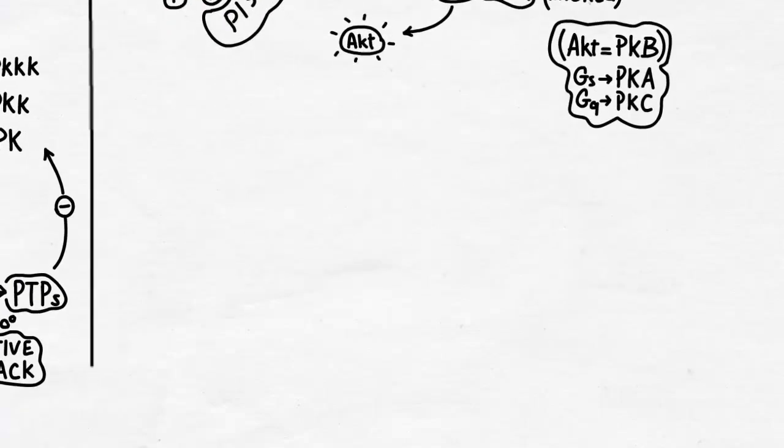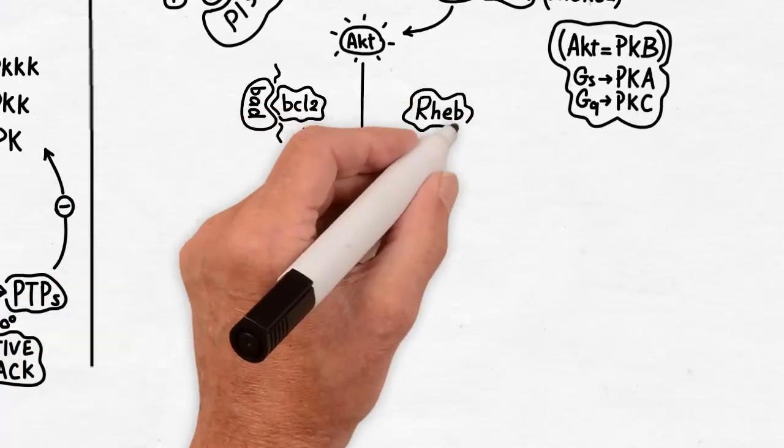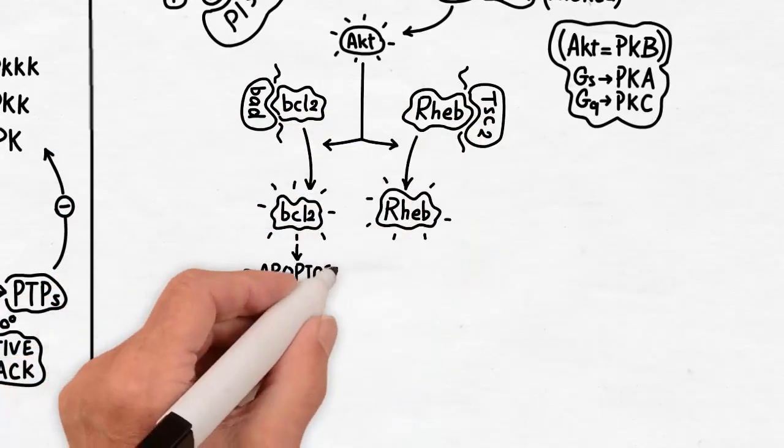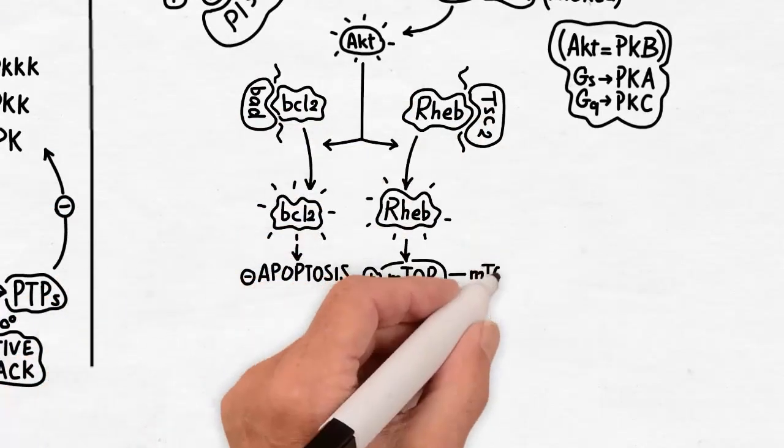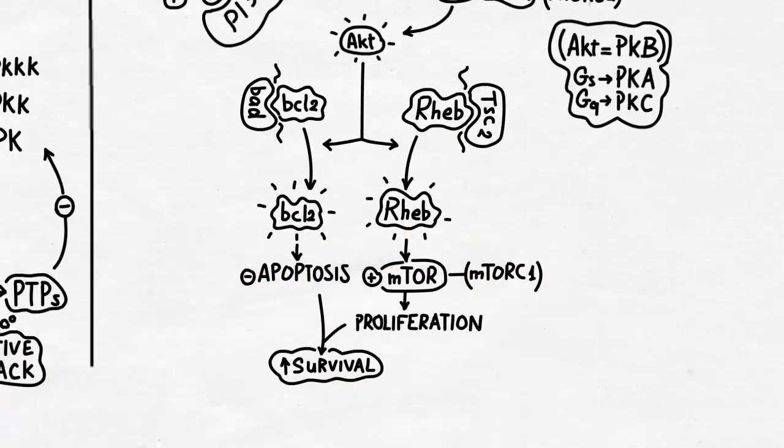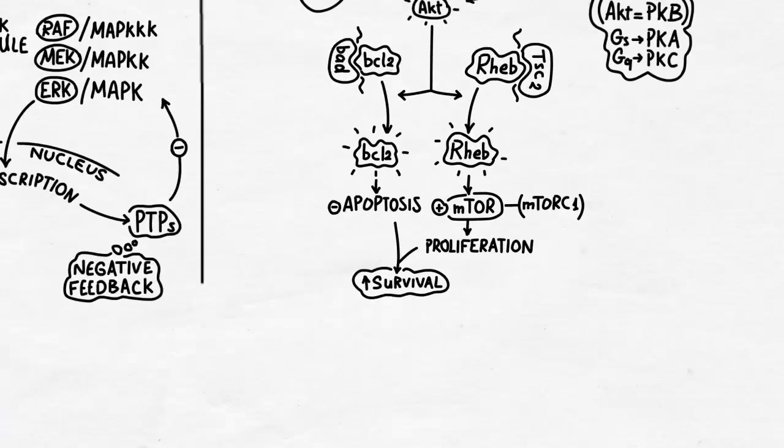An active AKT releases BAD from BCL2 and releases TSC2 from REB. In other words, it gives freedom to the BCL2 and REB proteins. BCL2 inhibits apoptosis, while REB activates mTORC1 which favors cell proliferation. So we can say that the pathway in general promotes cell survival.